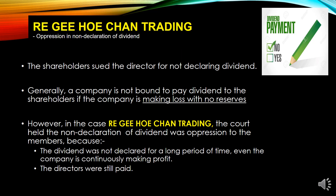In Re Gi Ho Chan Trading — oppression in non-declaration of dividend. The general rule is that a company is not bound to pay dividends to members or shareholders if the company is making a loss with no reserve, or if the company has not made a profit. For directors to declare a dividend, they must make sure that the company is solvent within 12 months following section 112 — the company must be able to pay creditors within 12 months.